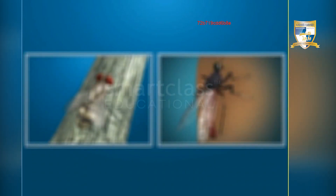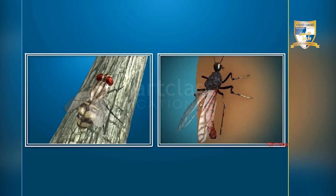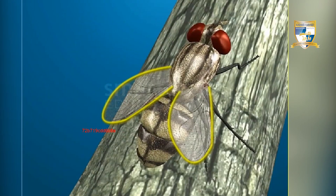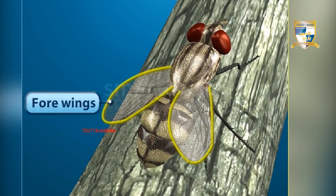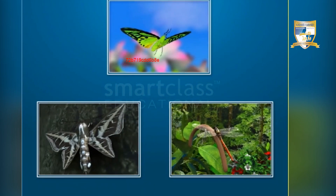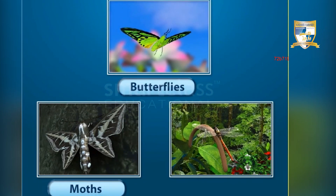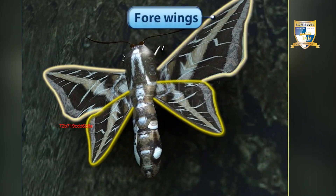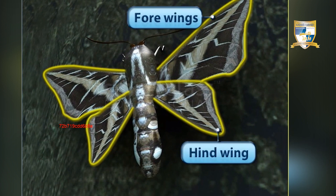Certain other animals can fly, such as birds and insects. Some insects like houseflies and mosquitoes possess only one pair of wings called forewings, which help in flying. On the contrary, others such as butterflies, moths, and dragonflies possess two pairs of wings — forewings and hindwings.